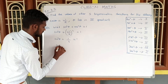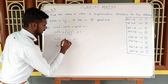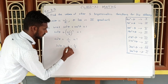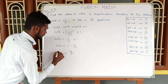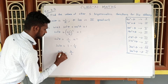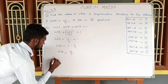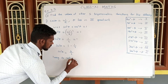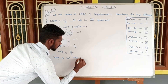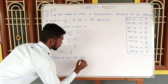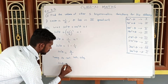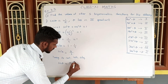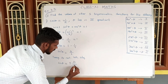So sin²θ = 1 − 1/4 = 3/4. Taking square root on both sides, sin θ = ±√3/2. We have sin θequal to plus or minus root 3 by 2.